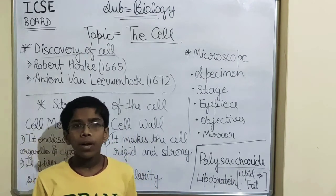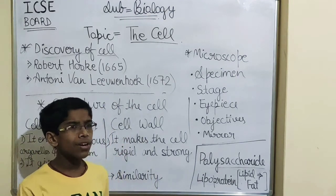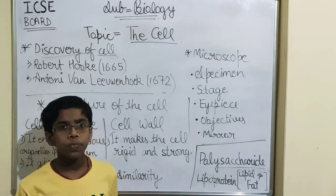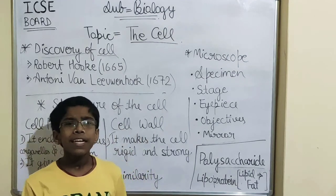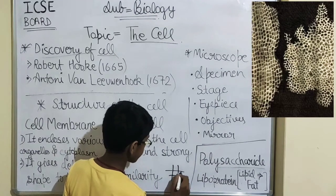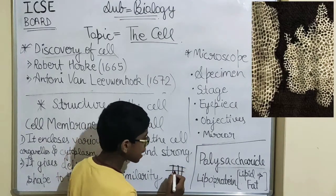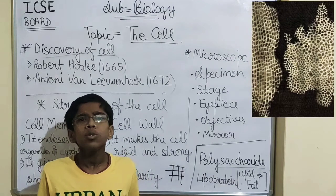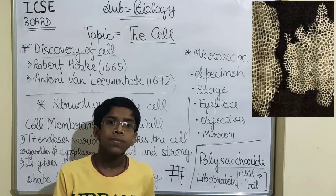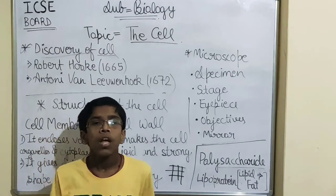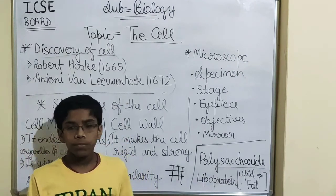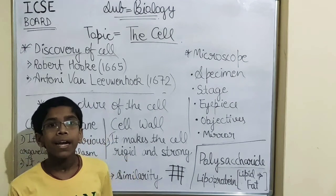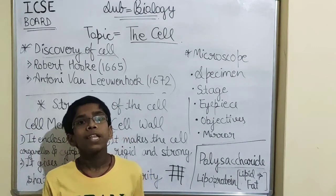One day he was examining a dry slice of cork under his microscope. He found that it is made up of some chambers. He called these chambers cells. Cork is a dead cell, so he was unable to see what lies inside a living cell. From that point onward, all the discoveries of the contents of a living cell were being made, and this was not possible without the help of a microscope.